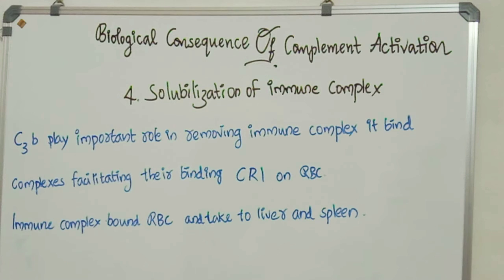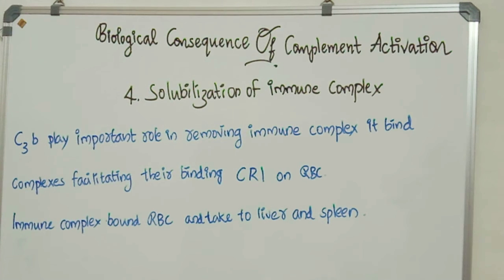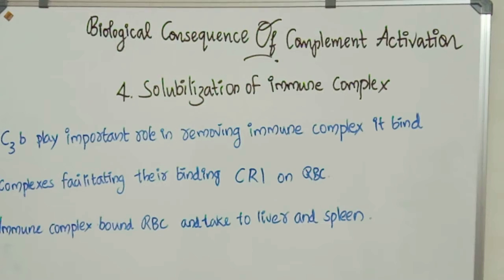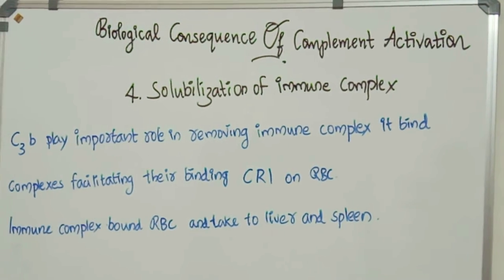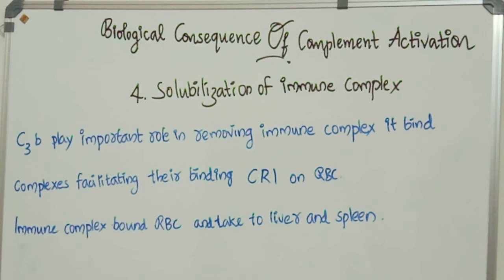Number 4: Solubilization of Immune Complex. C3B plays an important role in removing immune complexes, in which binding to these complexes facilitates binding with CR1 receptors on red blood cells (RBCs). The RBC-bound immune complexes are then taken to the liver and spleen. The main function of solubilization or immune clearance is discussed in the function of the complement system.